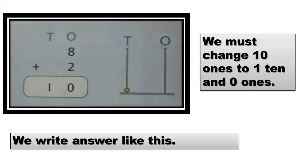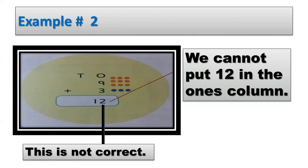Here we have another example. In this, we will add 9 and 3. Here we have 9 balls and 3 more balls. Now let's count how many balls all together. Count with me: 1, 2, 3, 4, 5, 6, 7, 8, 9, 10, 11, 12. Here we write 12 — 12 balls all together.